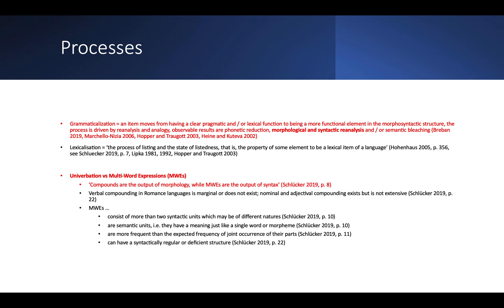What processes are relevant? Obviously grammaticalization — an item moves from having a clear pragmatic or lexical function to being a more functional element in the morphosyntactic structure. The process is driven by reanalysis and analogy. The observable results are phonetic reduction — think of going to versus gonna in English — morphological and syntactic reanalysis, and semantic bleaching — think of the English will future, which now primarily indicates futurity after having been a modal verb. The other relevant process is lexicalization — the state of listedness, the property of an element to be a lexical item of a language. Support verb constructions are verb-noun collocations that might become more lexicalized and fuse a bit tighter.